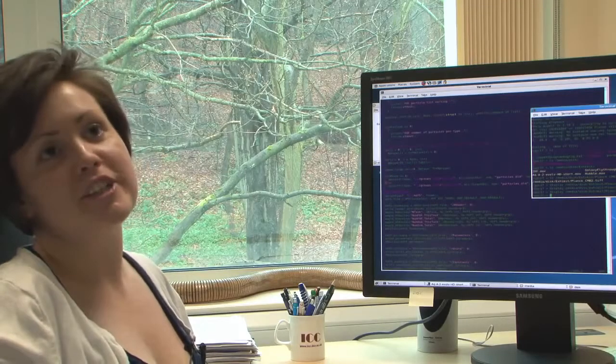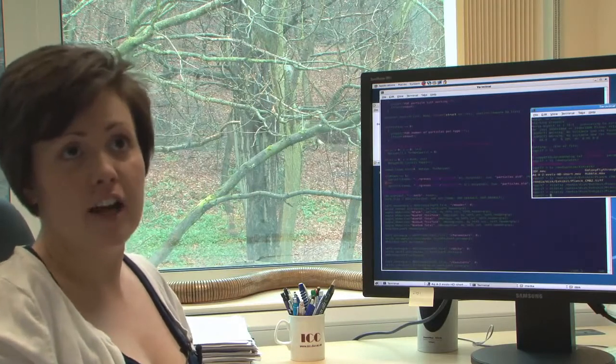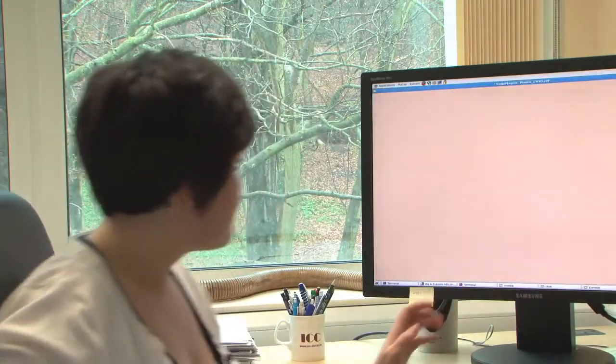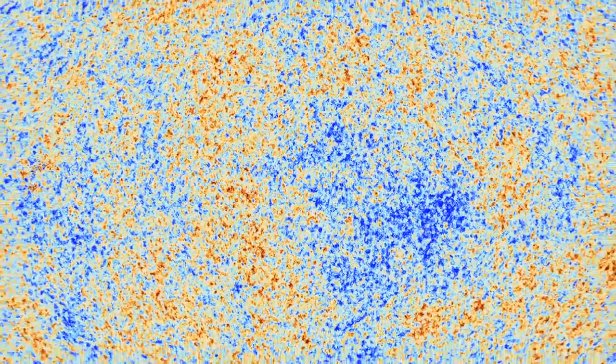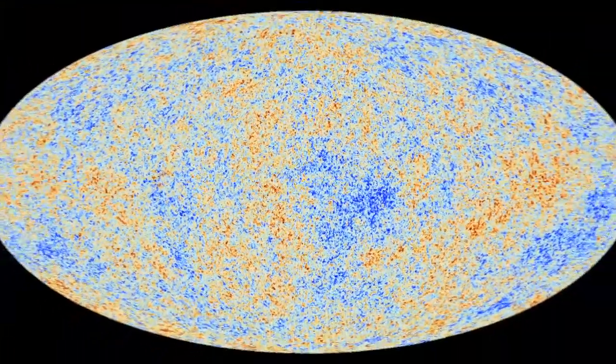To do a simulation we start with a picture of what we think the universe looked like at early times shortly after the Big Bang. For example, this is a map taken by the Planck satellite very recently and this is basically the starting point for our simulation. We then evolve our simulation to the present day and look at the comparison between what the universe should look like and what we think it looks like.